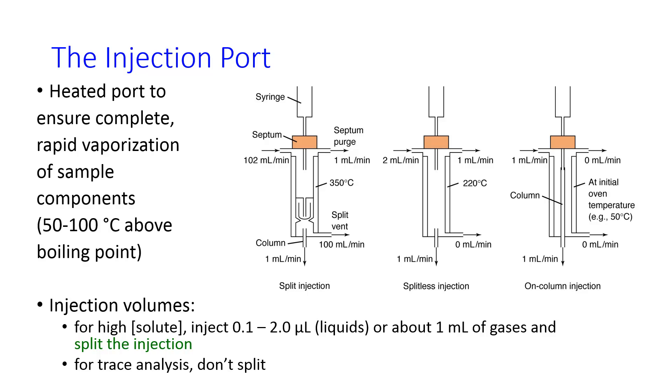The injection port should be held 50 to 100 degrees C above the boiling point of all analytes, so typically 200 degrees C is a good idea for an injection port. You want this to ensure complete rapid vaporization of the sample as soon as you inject. You inject with a syringe through the septum. Typical injection volume is a couple of microliters. If you're using liquids, it may be up to a milliliter if you're using gases.